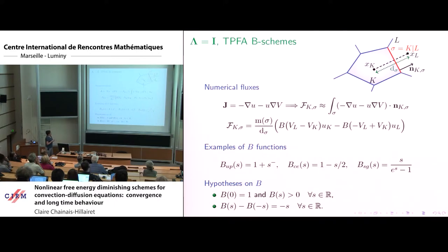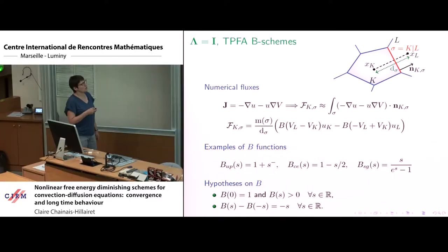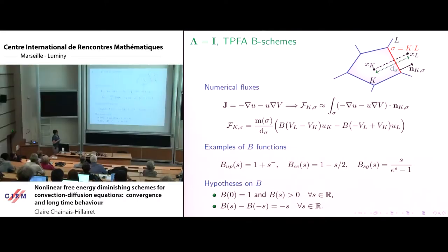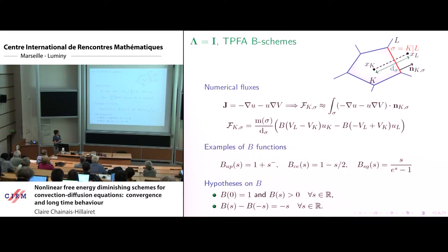If you want to write a finite volume scheme for the Fokker-Planck equation in the case where lambda is the identity matrix, you just want to approximate this flux. With a finite volume scheme, we define F_{k,sigma} as an approximation of the flux through edge sigma outward from cell k. You write a classical two-point approximation for the gradient of U and use either an upwind scheme or a centered scheme for the convective part. These two schemes lead to this kind of formula for the numerical flux F_{k,sigma}: some geometric quantities — the measure of the edge divided by the distance between x_k and x_l — times a function b.